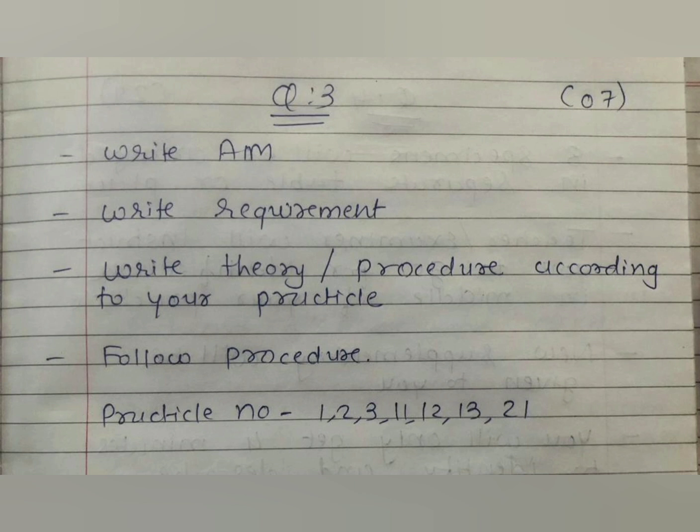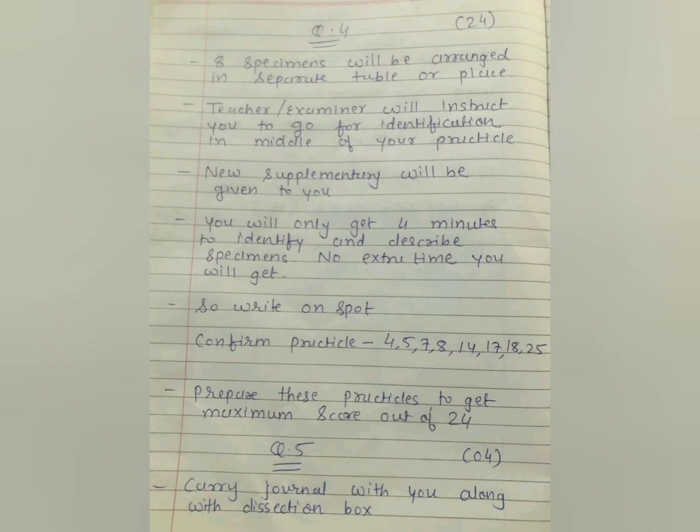For question number three, you have to write aim, requirement, theory, and procedure, because practical numbers 1, 2, 3, 11, 12, 13, and 21 have no observation table. So you only have to write appropriate theory and follow the procedure, then show your work to the examiner.